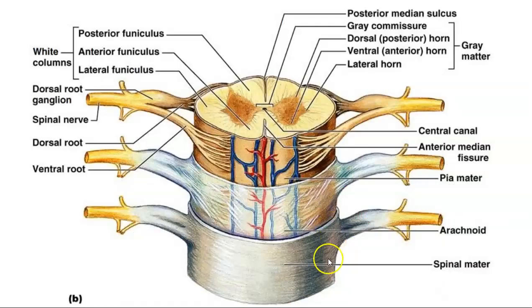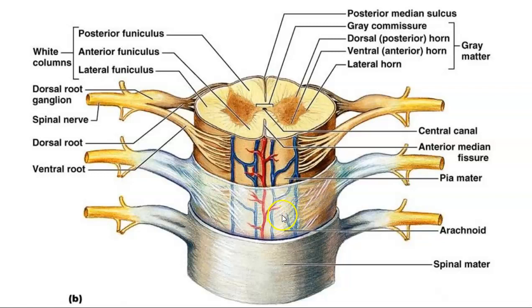So here they are in review. This is the most superficial layer — the tough layer, the tough mother — called the dura mater. And then deep to that we have the arachnoid mater. Underneath the arachnoid mater is where we have the cerebrospinal fluid. And then the pia mater is the layer that actually covers or touches the spinal cord.